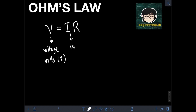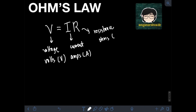I is the current, measured in amperes or amps, or capital letter A in honor of scientist André-Marie Ampère. And R is the resistance, measured in ohms, or the symbol omega (Ω).